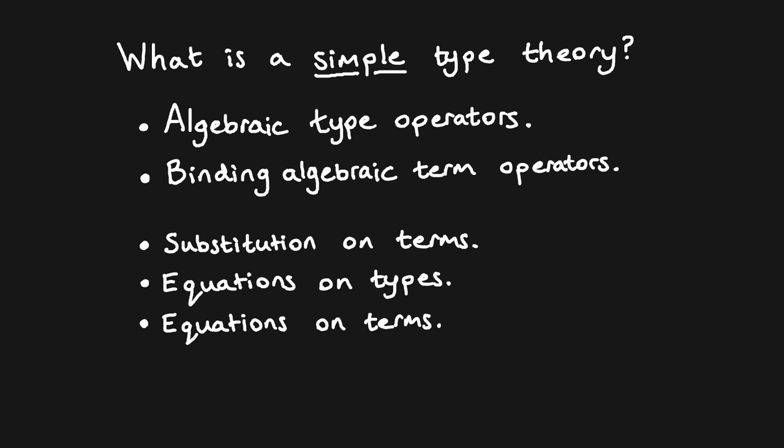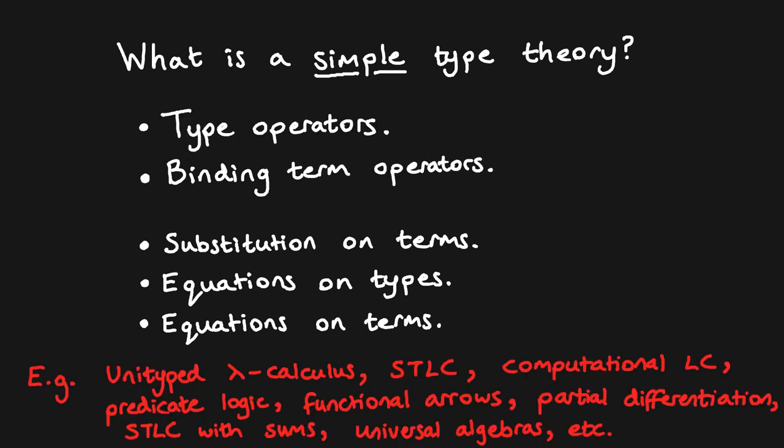This structure might seem overly basic, but even these simple type theories suffice to capture many interesting examples. For instance, both the unityped and simply typed lambda calculi, as well as the computational lambda calculus and the simply typed lambda calculus with sums, are all examples of simple type theories, as well as examples outside computer science, such as partial differentiation and predicate logic.